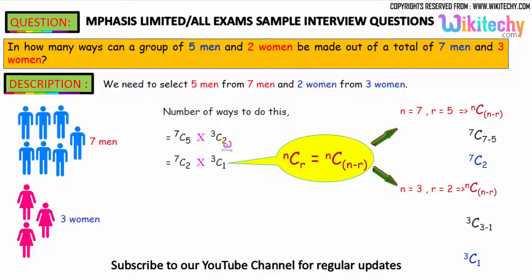As you know the formula, NCR is equal to NC(N-R). So putting this one 7C5, so 7 minus 5 you got 7C2 here. 3C2 we become 3C1.